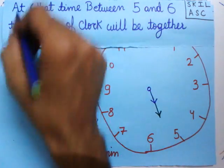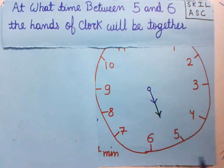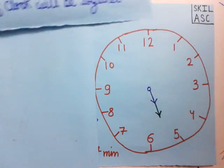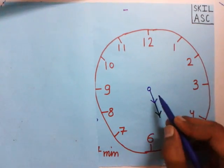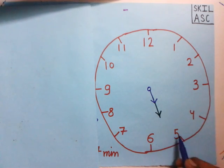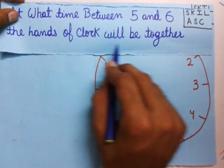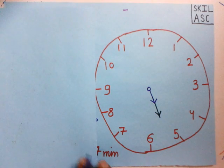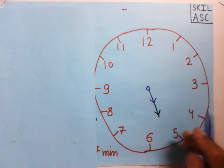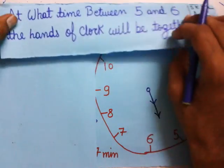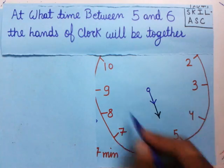To get a better idea about this question, we represent it in the form of a diagram. In this clock, according to the question, the time must be between 5 and 6, and you can see the hands are showing a time between 5 and 6. The next condition is that the hands must be together — this is the hour hand and this is the minute hand, and these are together.